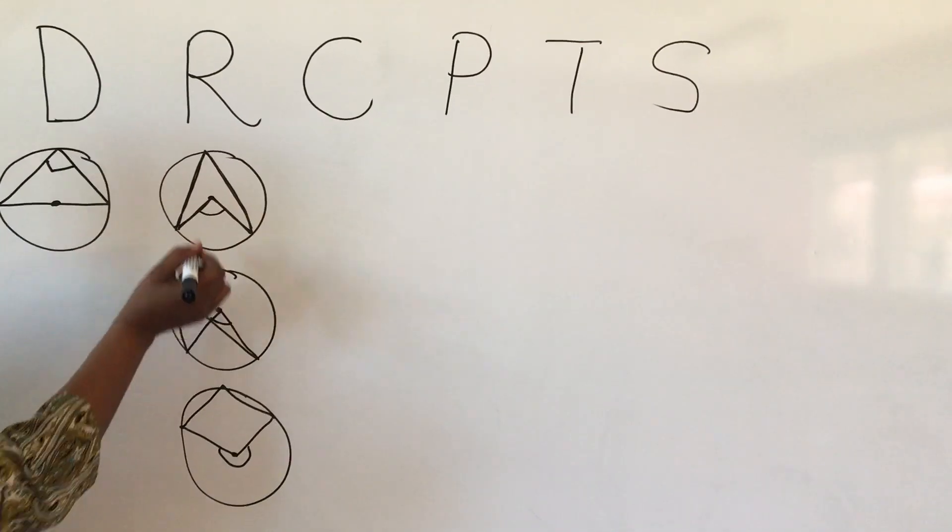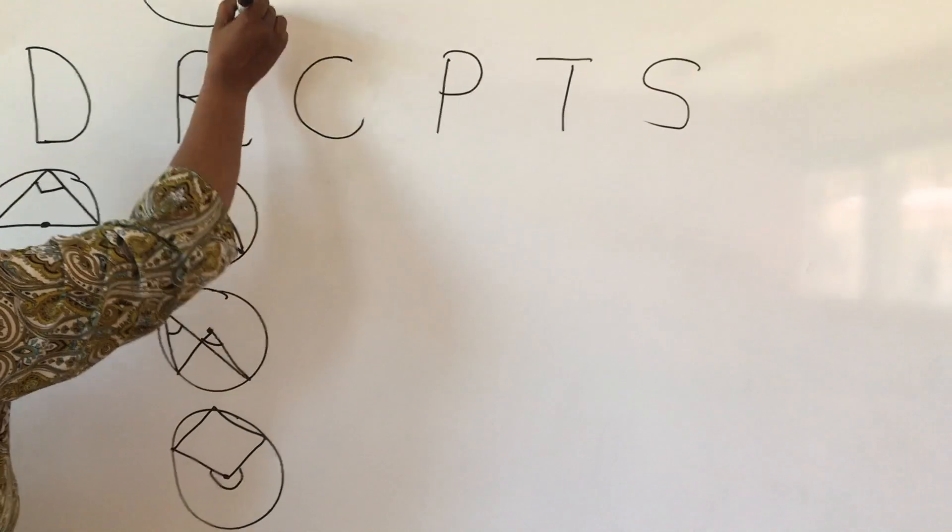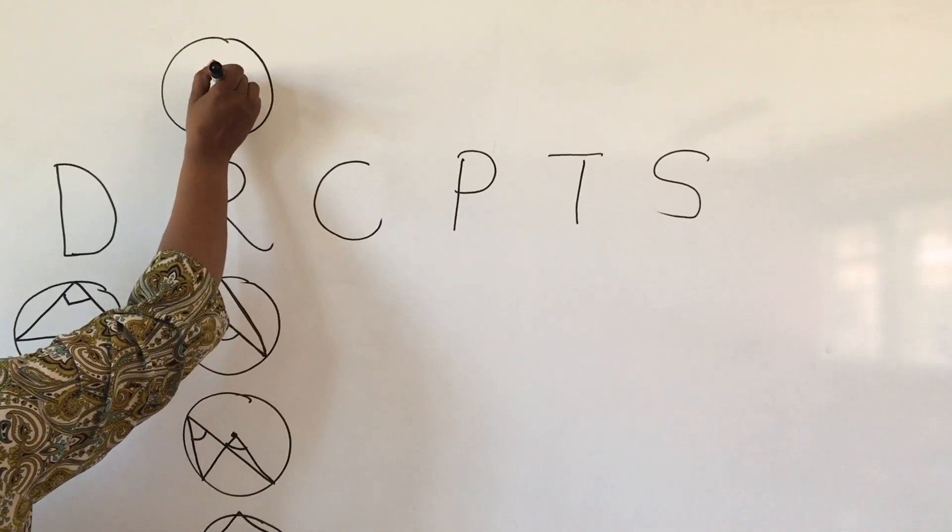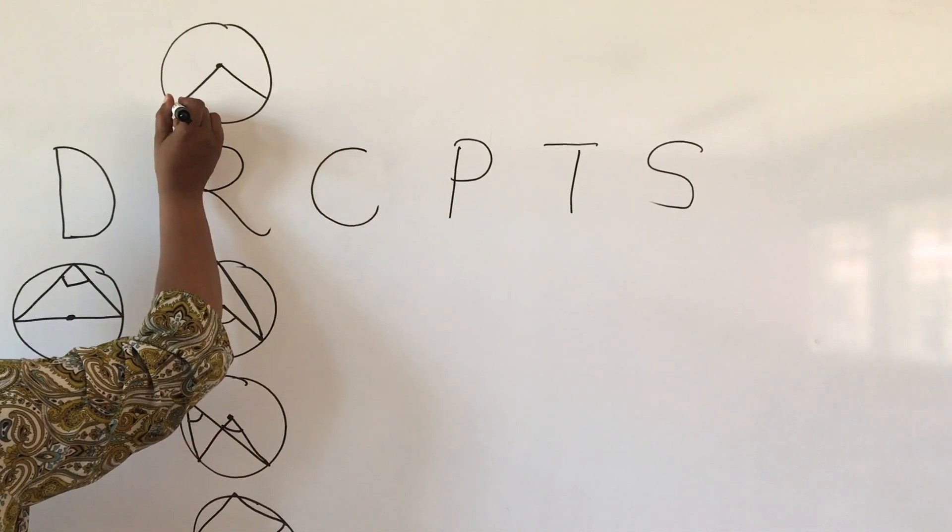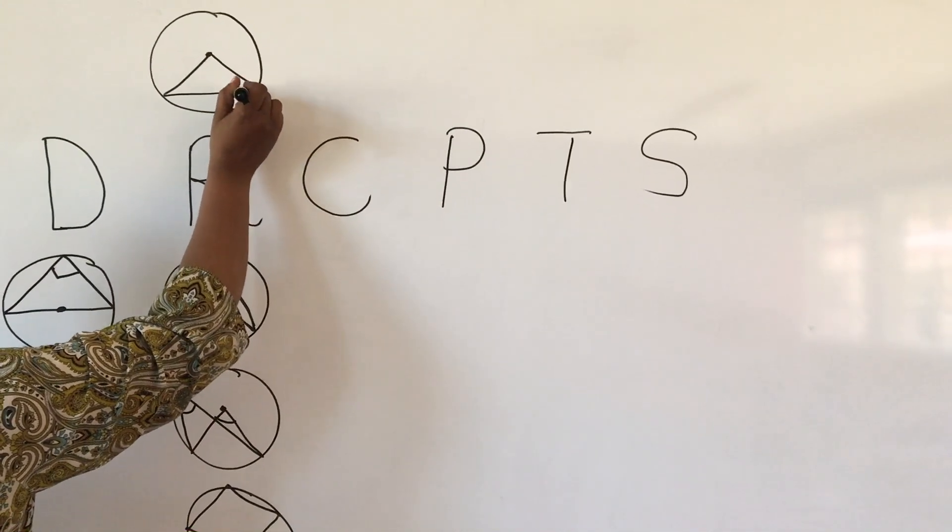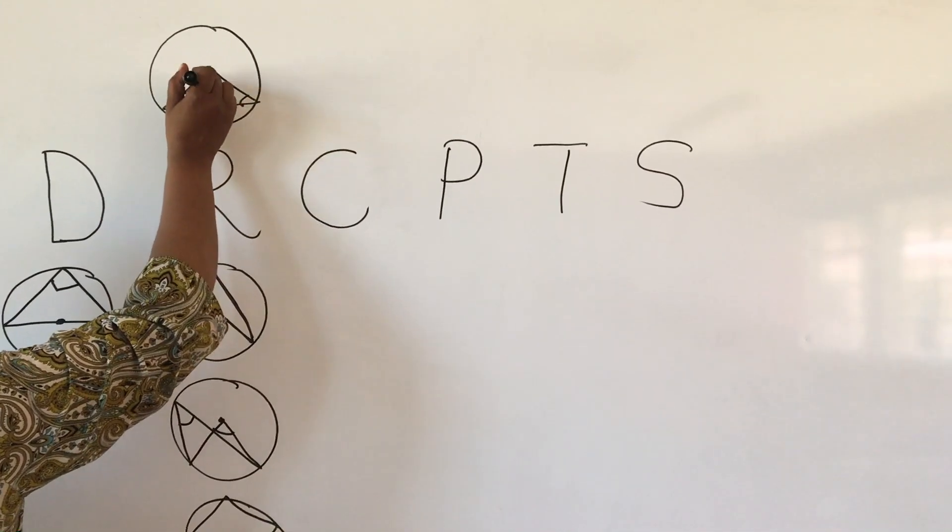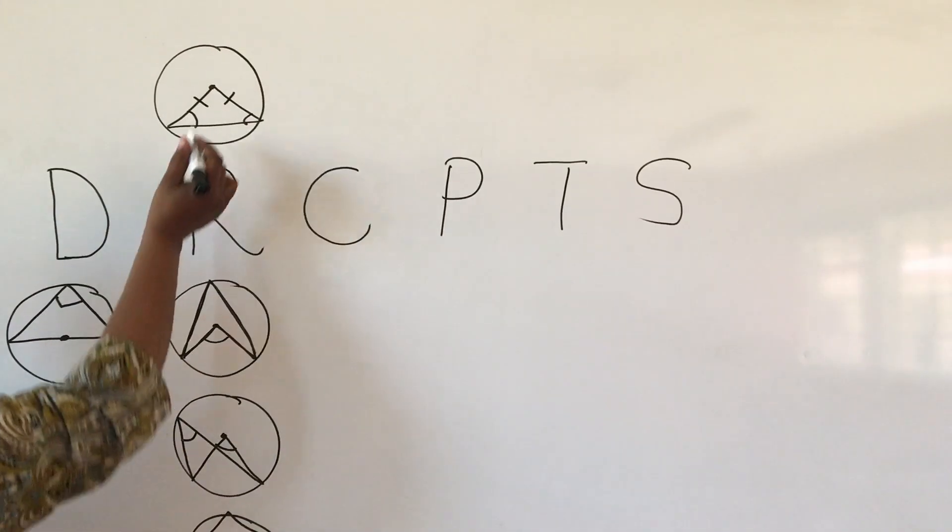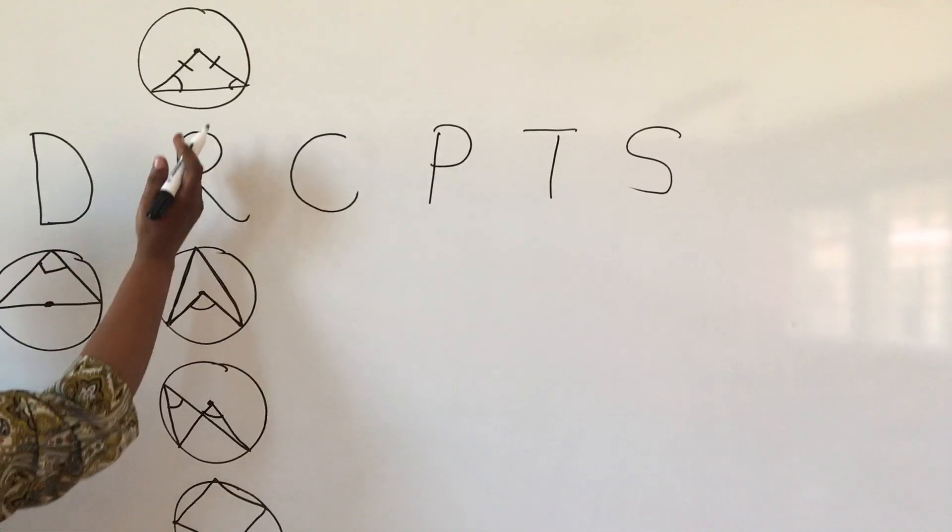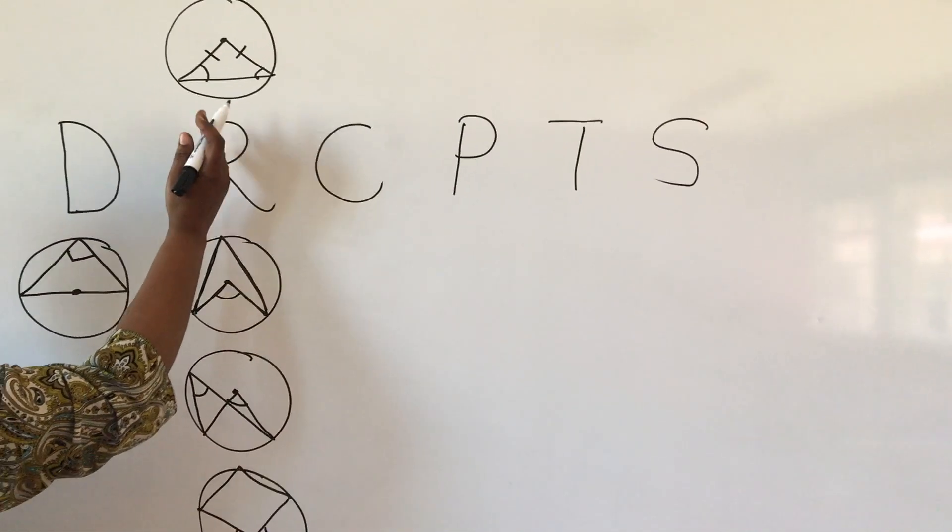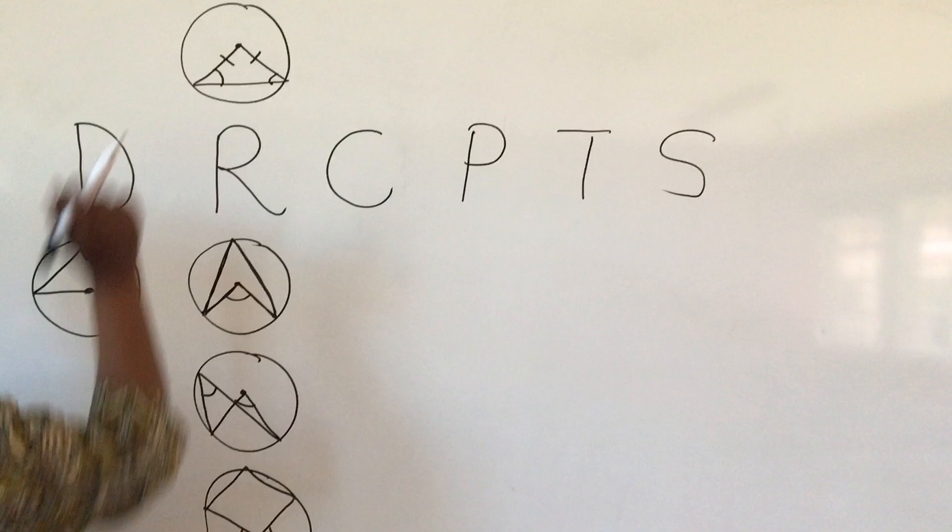But also with radius, you have angles opposite equal sides. Because you will have your radius like that, your radius like that. If you have a line there, then this angle is equal to that one. Because the radius will be equal to that radius. Angle opposite equal sides. So when you have your rider, look for radius. Look for this theorem and look for that one.